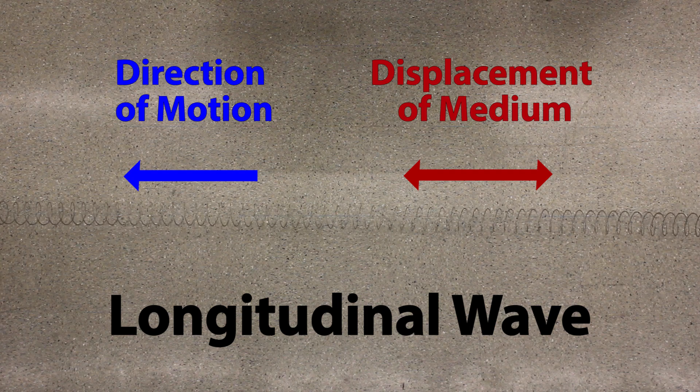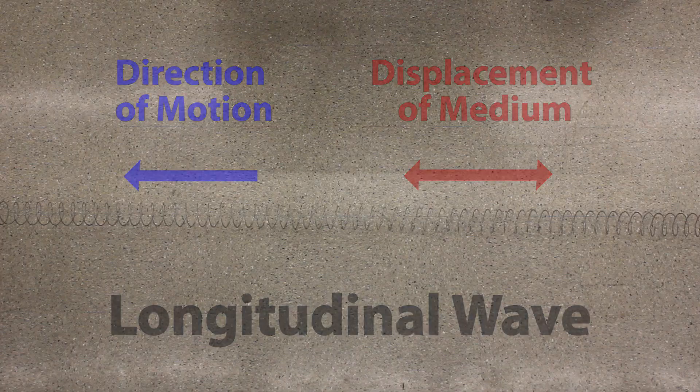So now we've seen several different properties of waves and the different types — transverse and longitudinal. The next step in physics for describing waves is to come up with a mathematical description for a wave, and that's what we'll be doing in the next video.